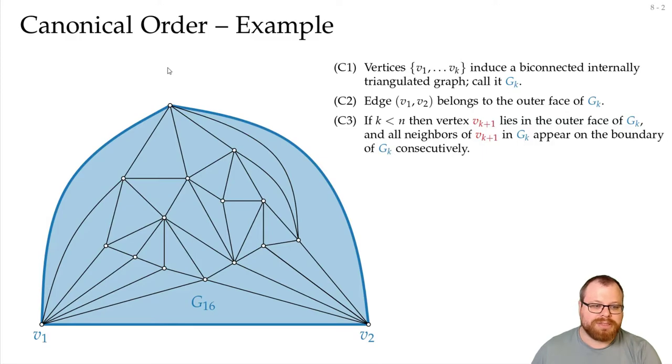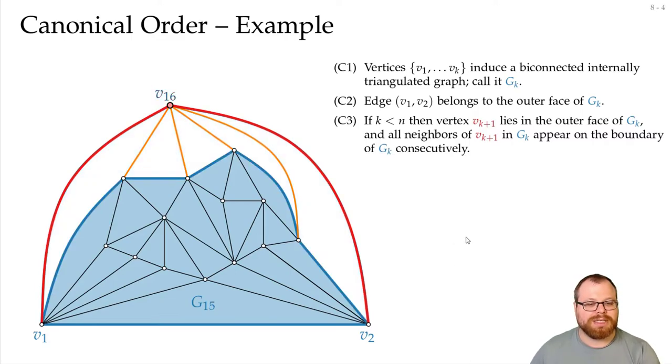What is the vertex we can pick here? Well, there is only one on the outer face, so this will be our vertex v16, and I've marked here the neighbors of it. And now we want to check if our conditions still hold, so let's have a look at graph G15.